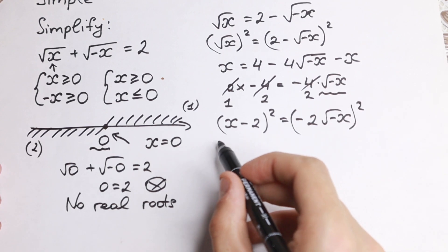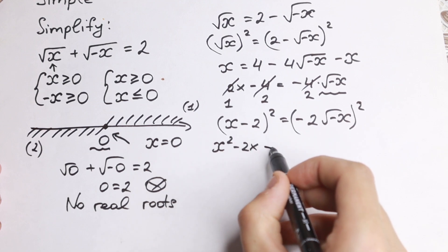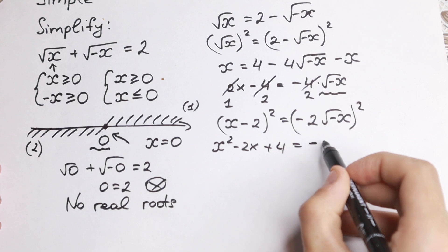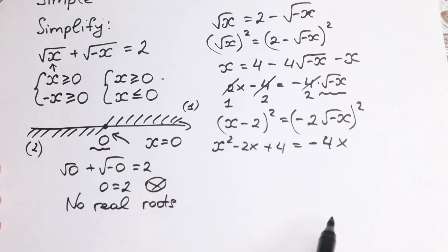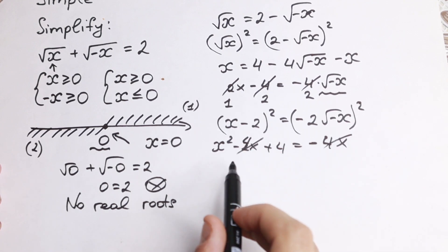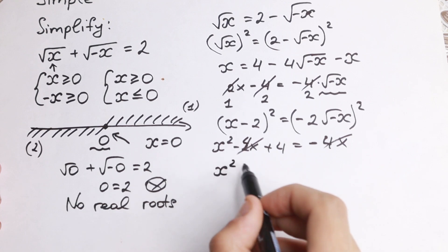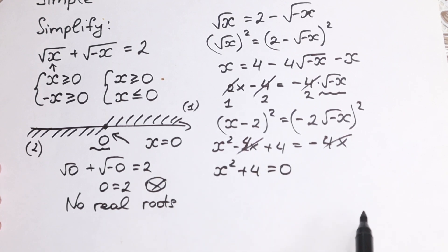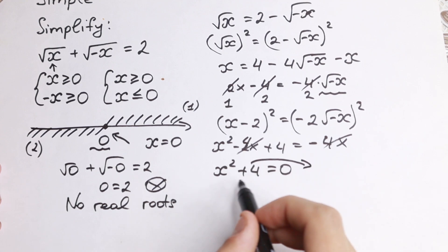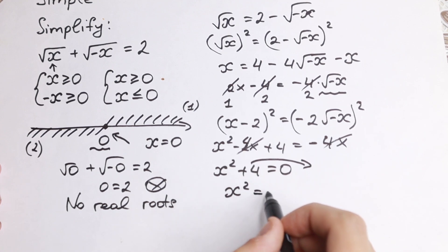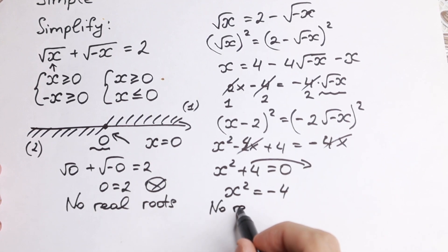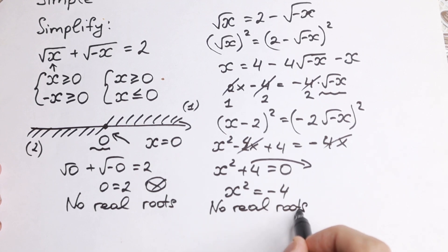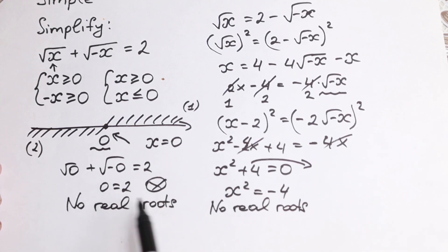Expanding: x² − 2x + 4 = −4x. Bringing all terms together and cancelling the 4: x² + 4 = 0, so x² = −4. This confirms that there are no real roots, consistent with the first method.